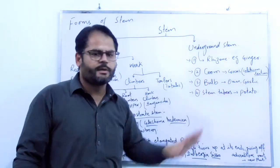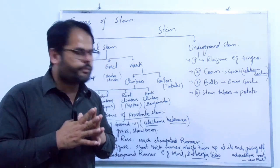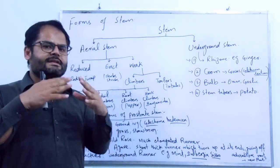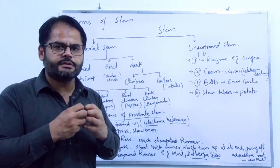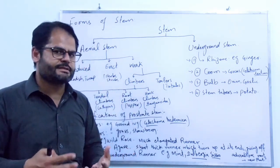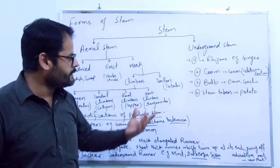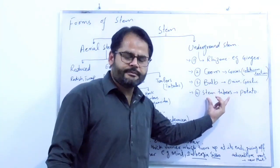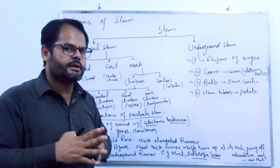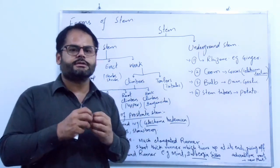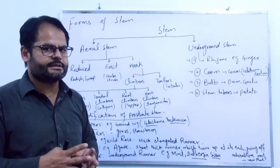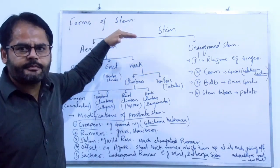The fourth category is called stem tubers, found in the potato plant. From the stem arises branches which develop leaves above the ground for photosynthesis. From the lower portion of the stem arise certain branches which develop stem tubers. These stem tubers have buds used in vegetative reproduction, and they store food in the form of carbohydrate, which is starch. This covers all about the various forms of stem in a plant.